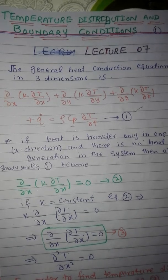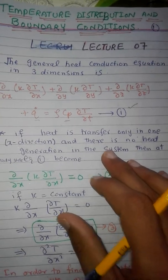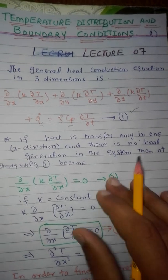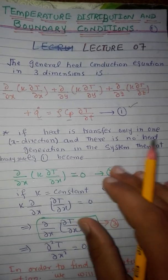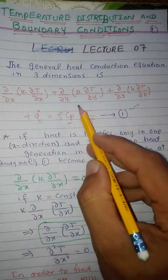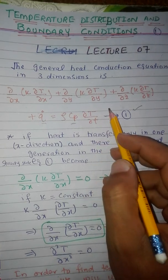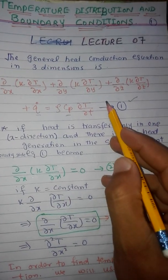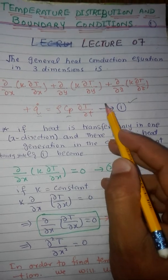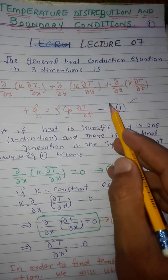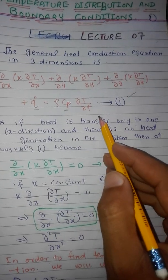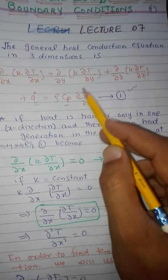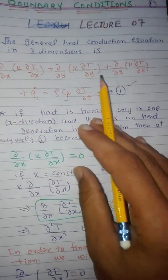In this lecture we will discuss how temperature distributes through a plane wall. We will simplify the general heat conduction equation to get the temperature distribution through the plane wall by canceling certain terms.